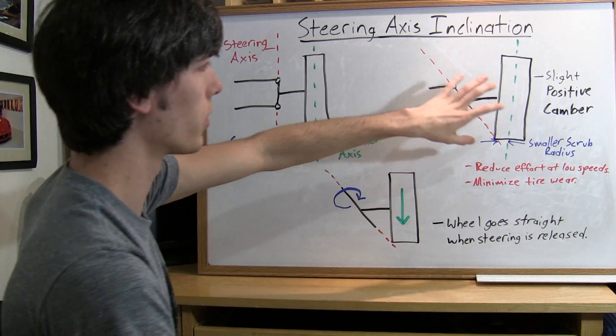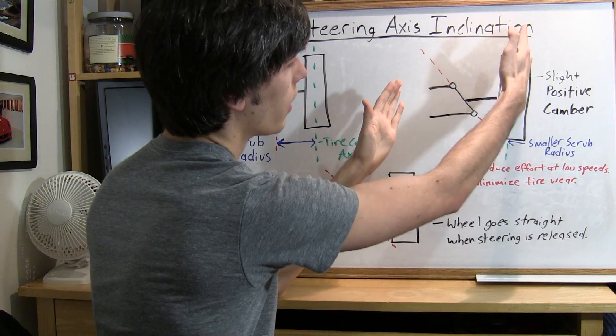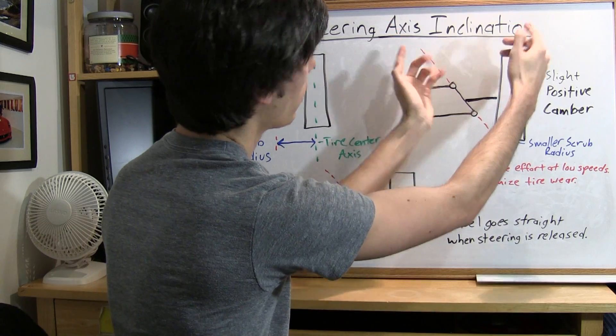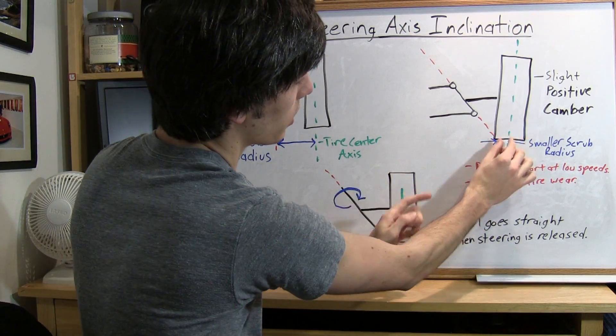Now also to go along with that which I was talking about in the previous video is a slight positive camber. So this slight positive camber and then you can get these two axes to come to a similar point.